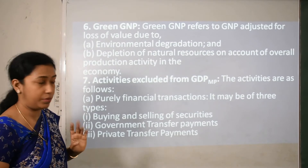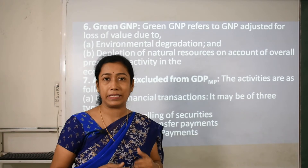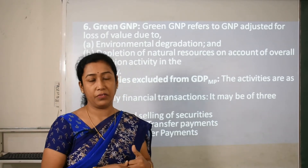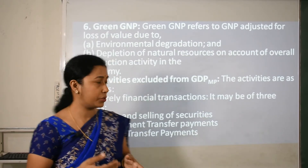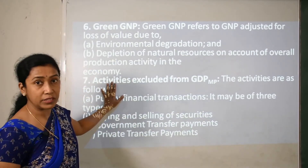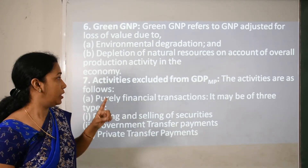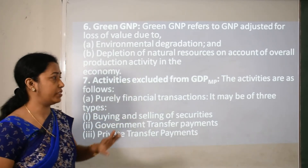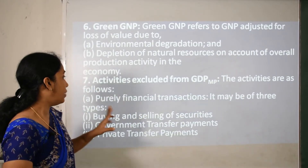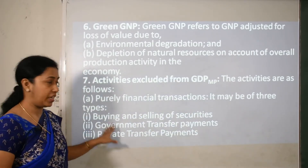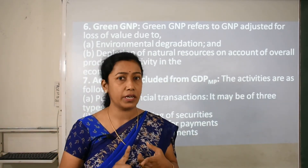Now, the seventh topic: activities which are excluded from GDP. While calculating GDP at market price, the first category of excluded activities is purely financial transactions. These are of three types: buying and selling of securities such as shares and bonds, government transfer payments, and private transfer payments.